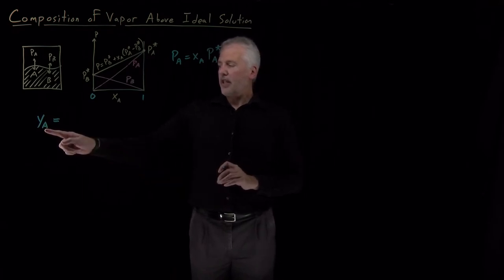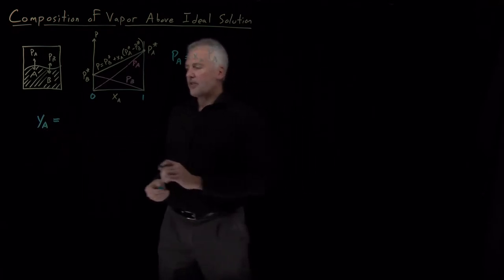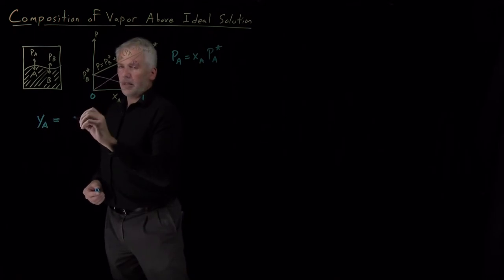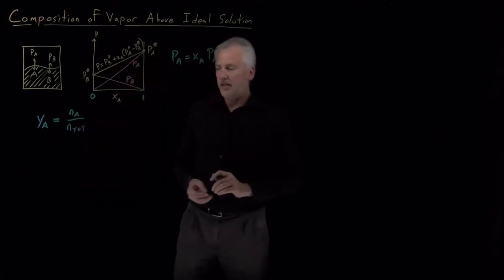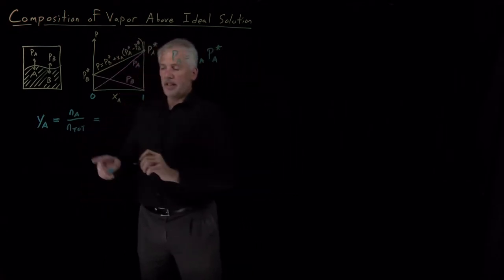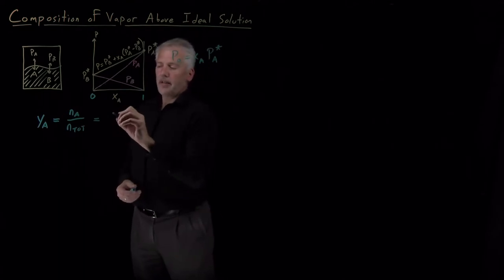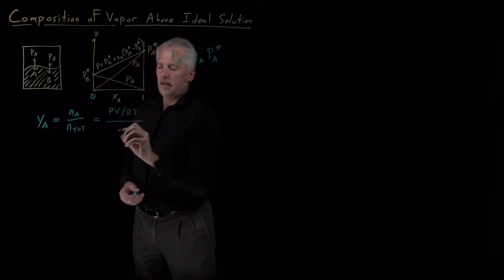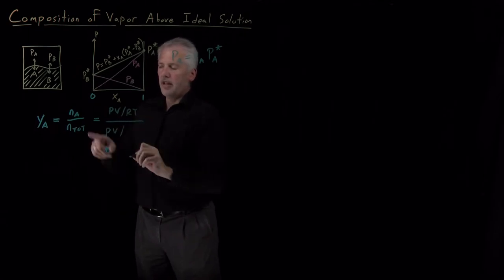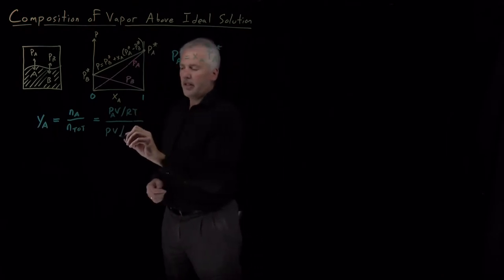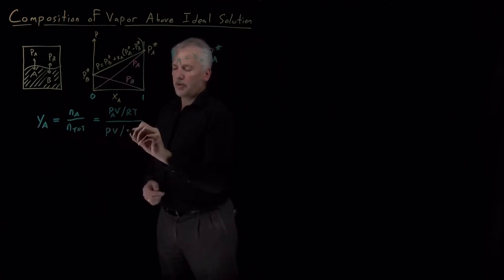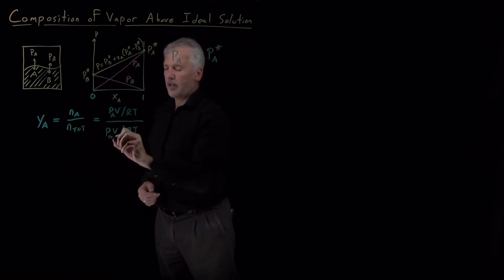The mole fraction in the vapor phase is moles of A over total number of moles in the vapor phase, but since it's in the gas phase, I can think of N as PV over RT. So it's PV over RT for A, in other words partial pressure of A times V over RT divided by total number of moles, and that would be total pressure.